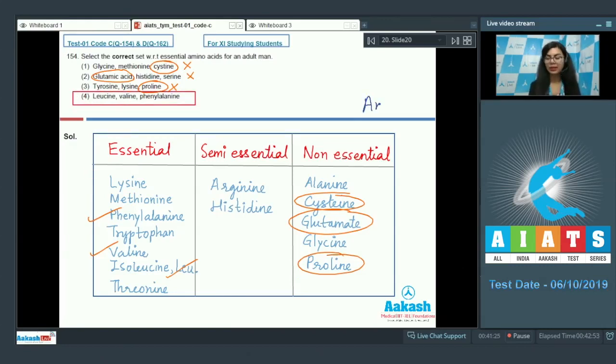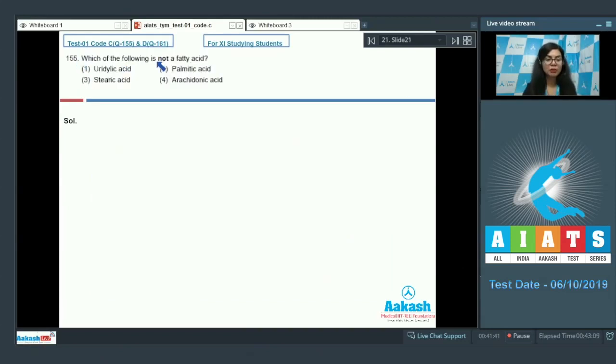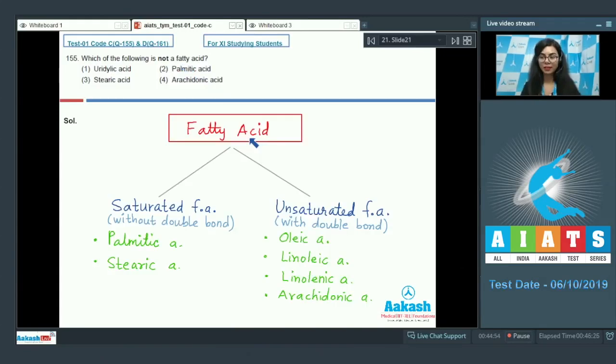Question 155: Which of the following is not a fatty acid? Uridylic acid, palmitic acid, stearic acid, or arachidonic acid. A fatty acid shows the presence of an unbranched chain of carbon atoms having a carboxyl group attached to an R group. The R group could be a methyl or higher number of CH2 groups, ranging from one carbon to 19 carbon atoms.